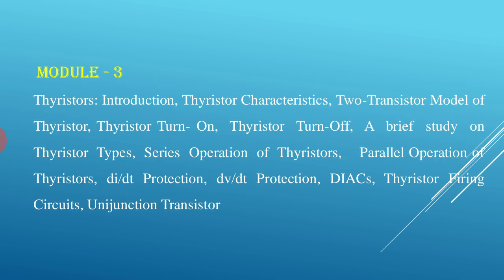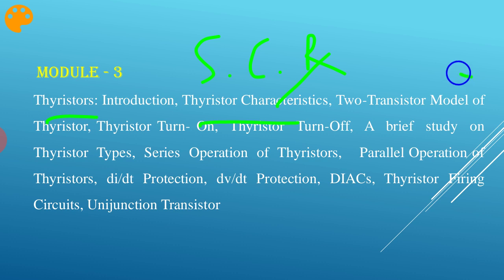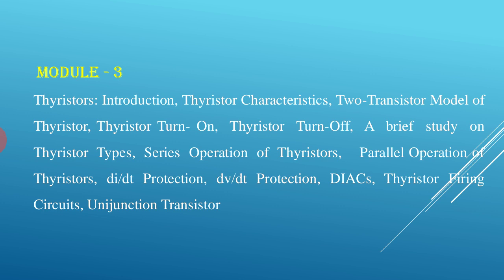Next is Module 3 on thyristors. The two-transistor model of the SCR is studied here, using two transistors — one PNP and one NPN — to model the SCR. We then study turn-on and turn-off methods of thyristors, covering the different turn-on methods and how the thyristor is turned on and turned off.